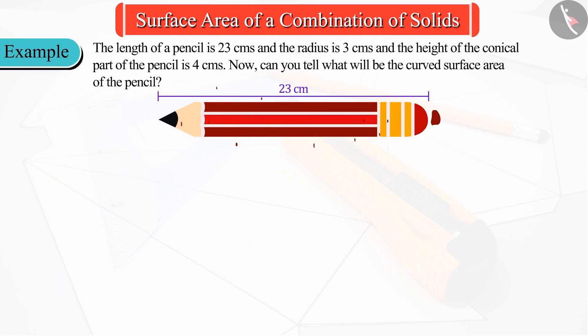The length of a pencil is 23 centimeters and the radius is 3 centimeters and the height of the conical part of the pencil is 4 centimeters. Now can you find what will be the curved surface area of the pencil?